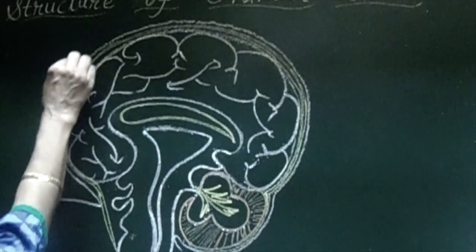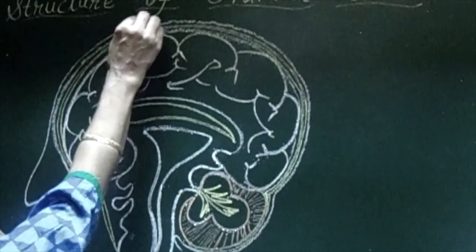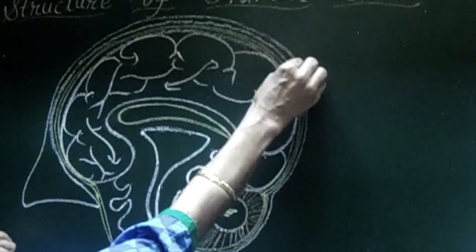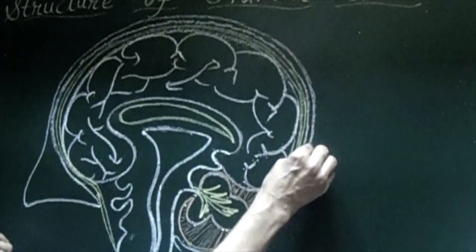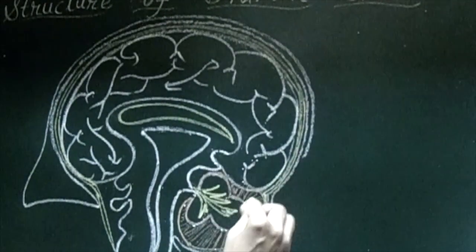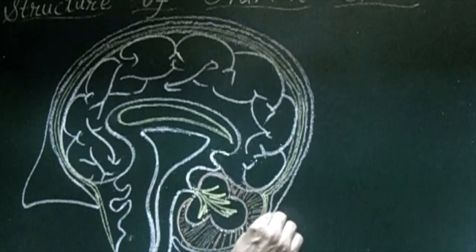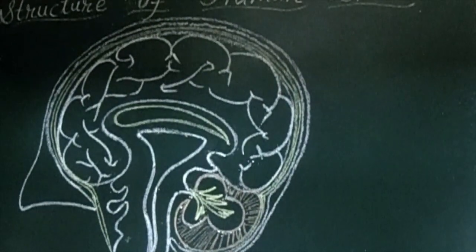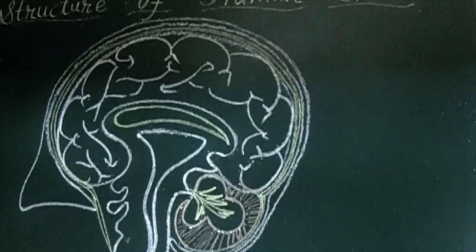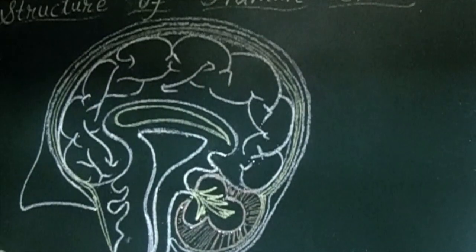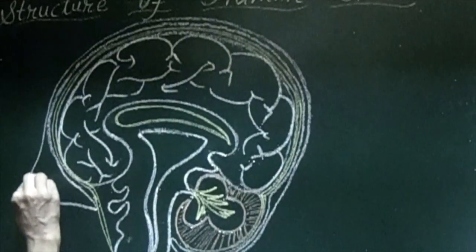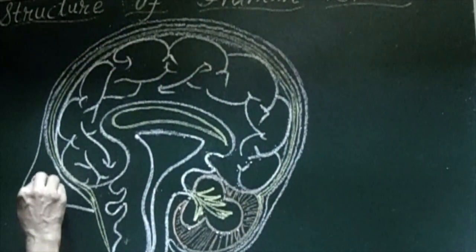Like this, so complete this layer also. When you come to this end, now you bring it straight. Now this is what we have drawn here, you put a comma-like structure.